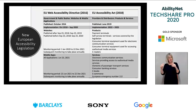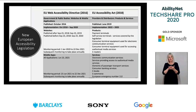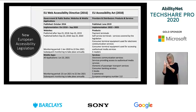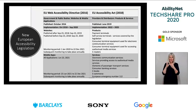Finally, the Marrakesh Treaty to facilitate access to published works for people who are blind or visually impaired, otherwise known as the MVT of 2013, requires limitations and exceptions to copyright law to permit reproduction, distribution, and making available published works in formats designed to be accessible to visually impaired persons. It covers persons who are blind, visually impaired, or print disabled, or with a physical disability that prevents them from holding and manipulating a book.